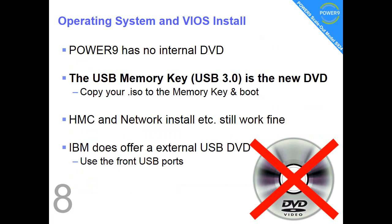You may not have noticed, but Power9 has no internal DVD. DVD is a pretty old technology — mechanical, unreliable and pretty slow too. So for installing your operating systems via the VIO server, you've moved on. It fully supports the USB memory key, or thumb drive. Go for the USB 3.0 version — from my experience that's about three times faster. Copy your ISO image to your memory key and boot up from it. HMC and network install still works fine too.